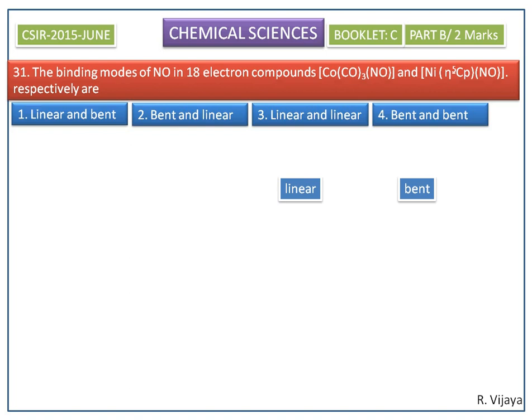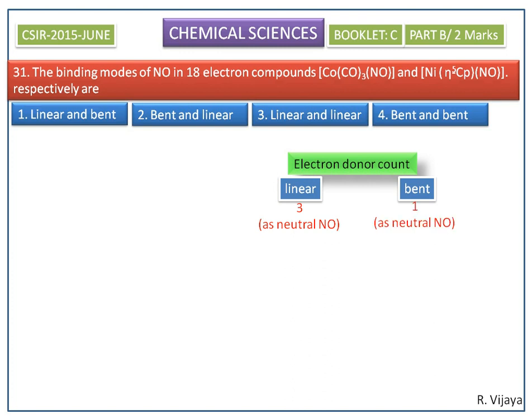NO plus is isoelectronic with CO. Now we do the electron donor count for these two complexes. In the neutral method, NO can donate three electrons for linear coordination, and only one electron for bent structure. In the ionic method, NO plus can donate two electrons for linear structure, and NO minus can donate two electrons for bent structure.